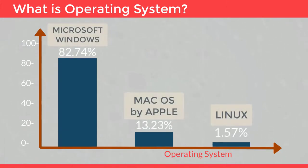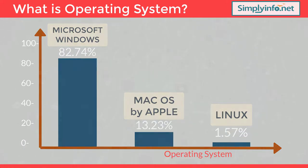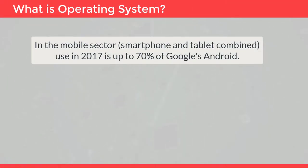Microsoft Windows holds a market share of around 82.74 percent. Mac OS by Apple is in second place with 13.23 percent, and the varieties of Linux are collectively in third place with 1.57 percent. In the mobile sector, smartphone and tablet combined use in 2017 is up to 70 percent for Google's Android.